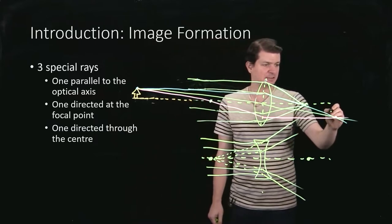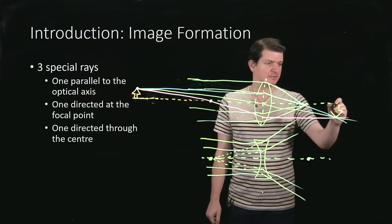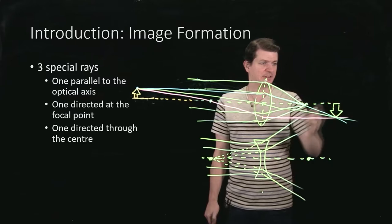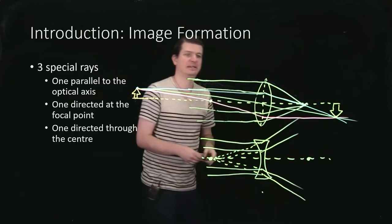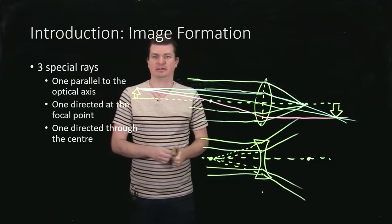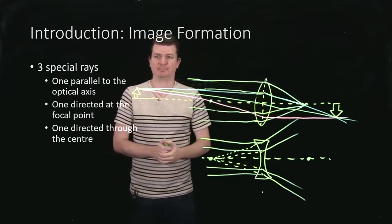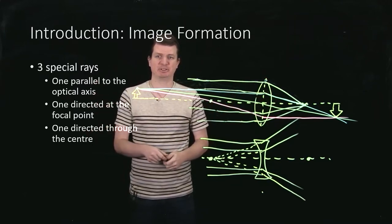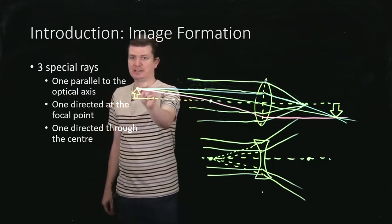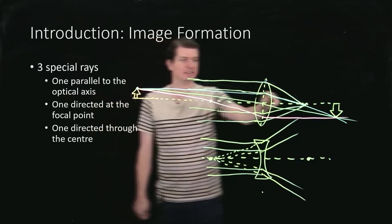So what you're seeing is that you're going to create a slightly magnified upside-down tree or house or whatever this thing is over there. By using these three special rays, we've determined where the image of this thing ends up.